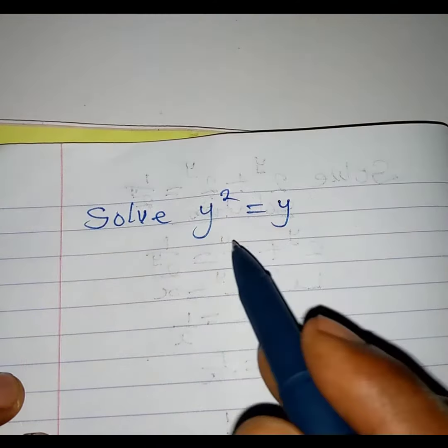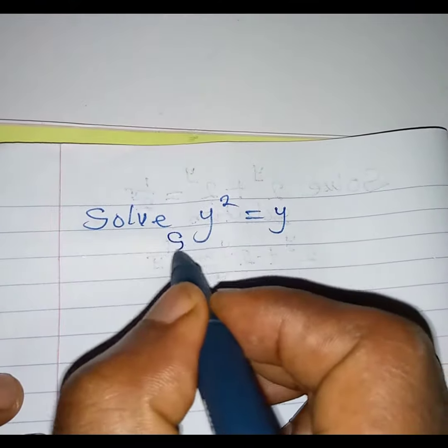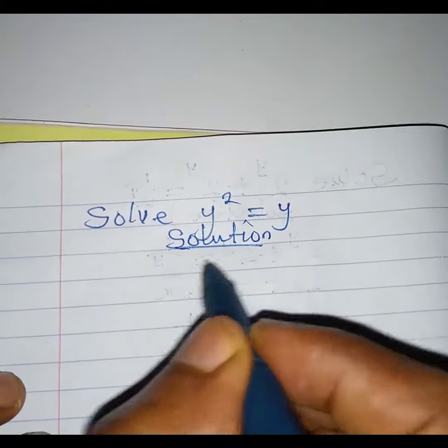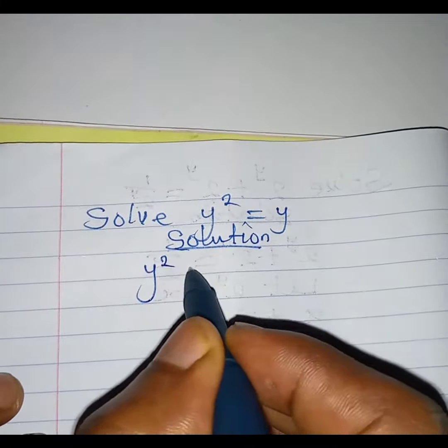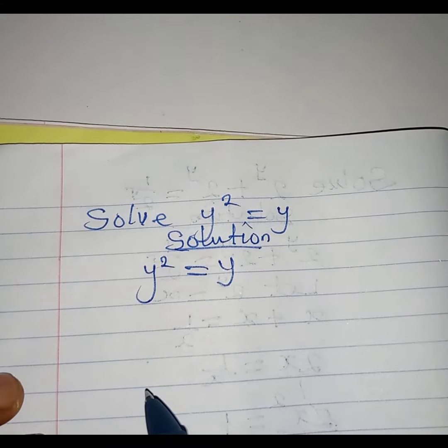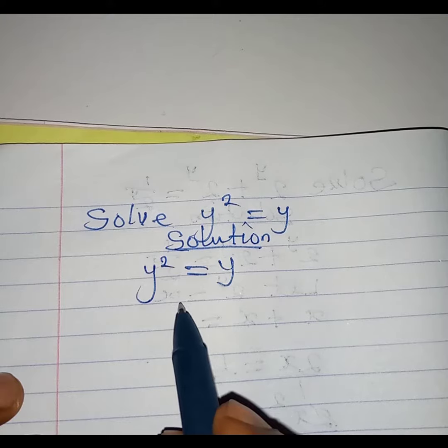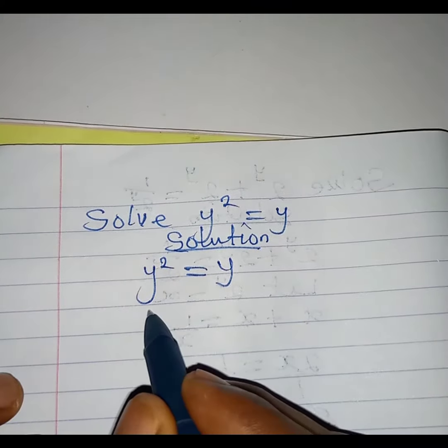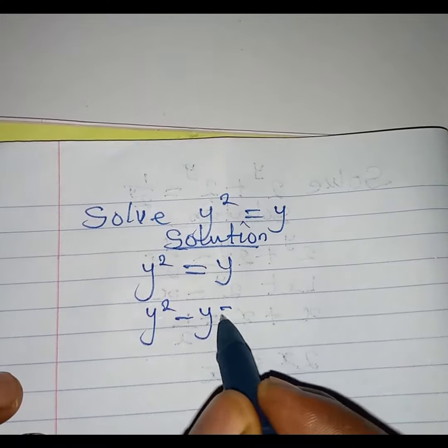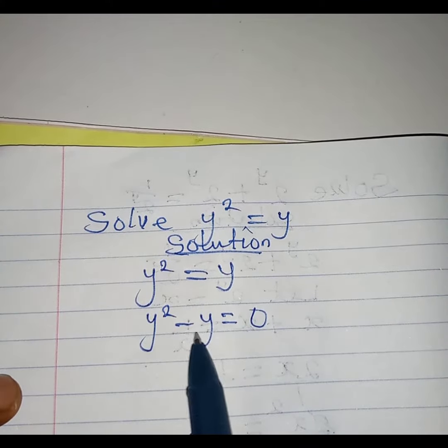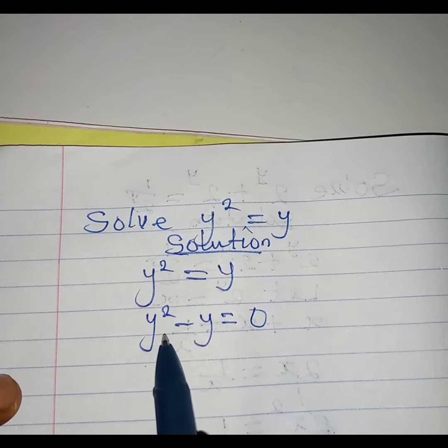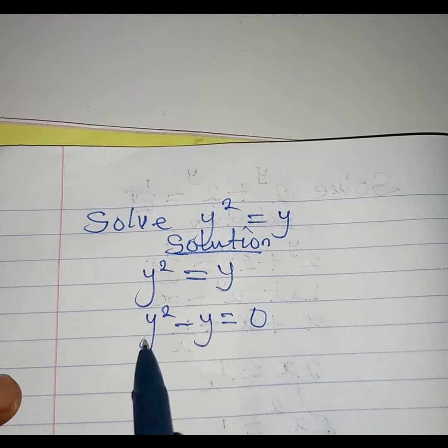Hello everyone, let us solve this problem quickly. Solution: we have y squared equals y. So what do we do? Remember, this is a quadratic equation, so we can say that y squared minus y is equal to zero. From here we can use the factorization method because y is common to both terms.